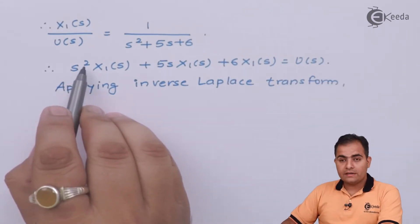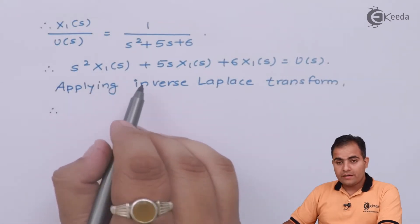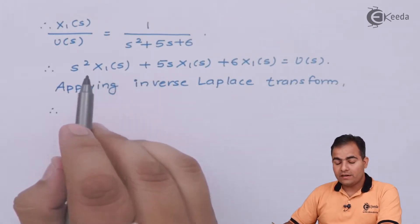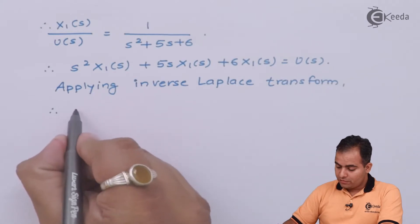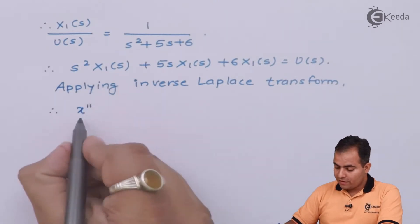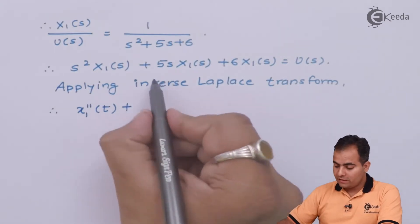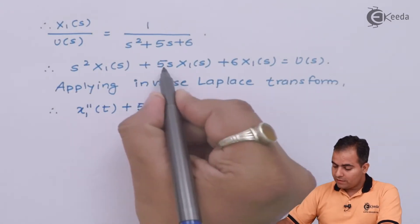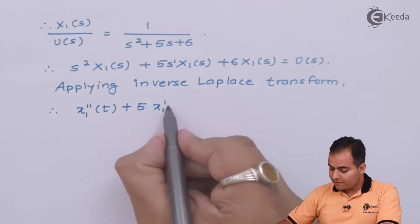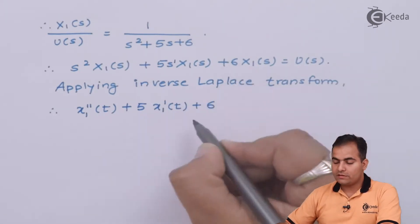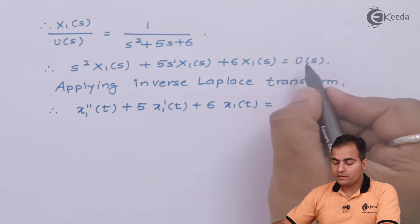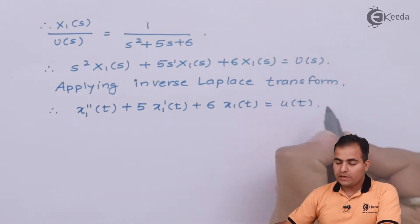The equation is second order. After applying the inverse Laplace transform, we get x1-double-dash(t) — the second derivative — plus 5 times x1-dash(t) — the first derivative — plus 6·x1(t) = u(t). The highest degree of differentiation is 2, which means we can use 2 state variables.